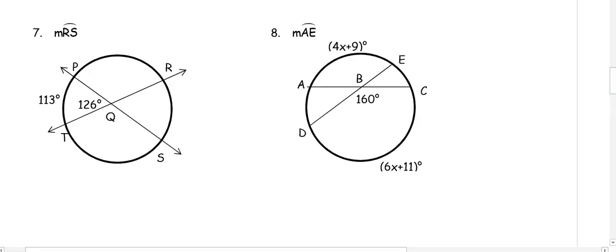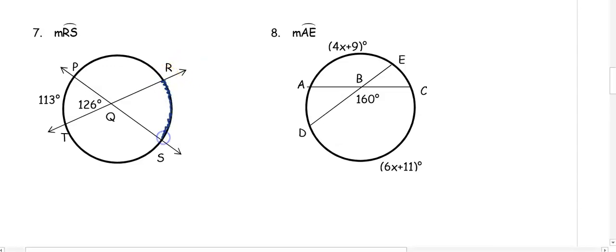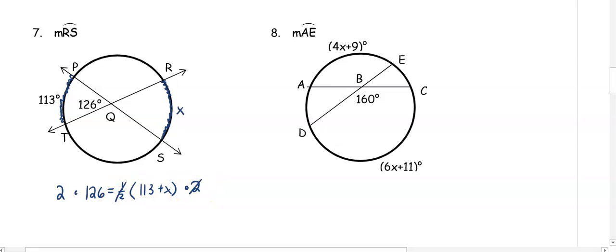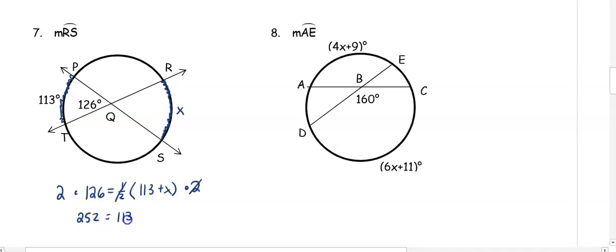In number seven, we want to find arc RS. We call arc RS X. The angle is 126 degrees, so 126 equals one-half of 113 plus X. Multiplying both sides by 2 gives 252 equals 113 plus X. Subtracting 113 from both sides, we get X equals 139 degrees.